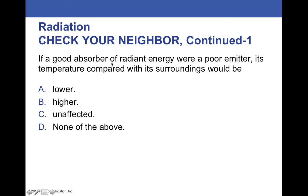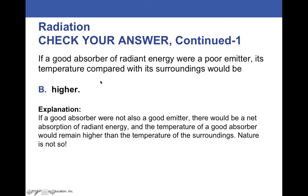If a good absorber of radiant energy were a poor emitter, its temperature compared with its surroundings would be, and I'll go ahead and let you pause and answer that. Higher. And the example I gave was a seatbelt in a hot car on a hot day.